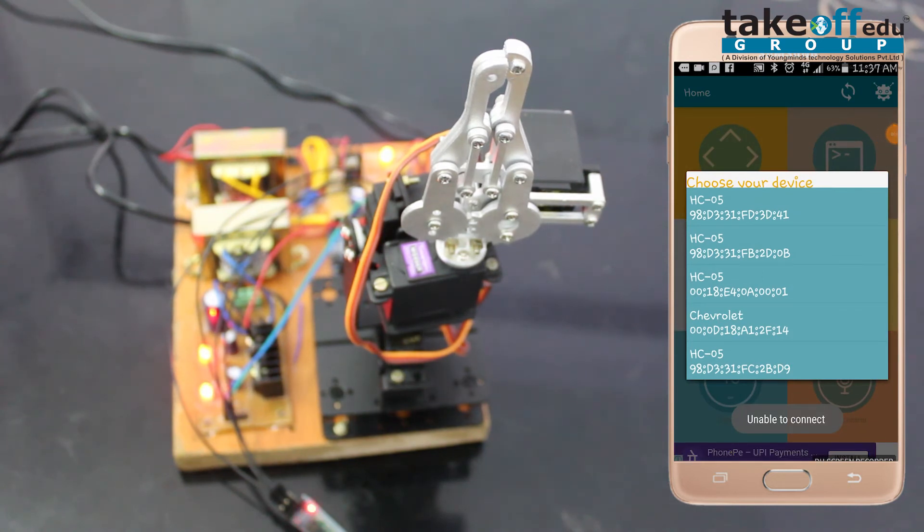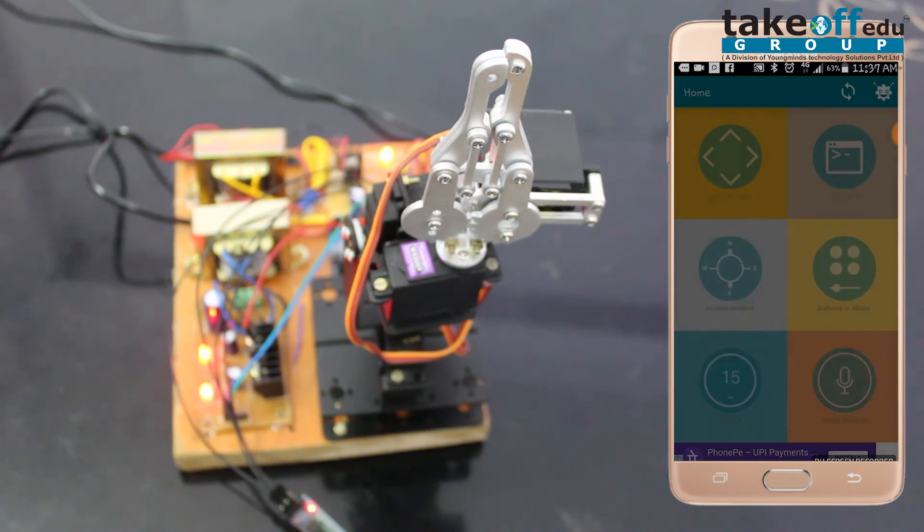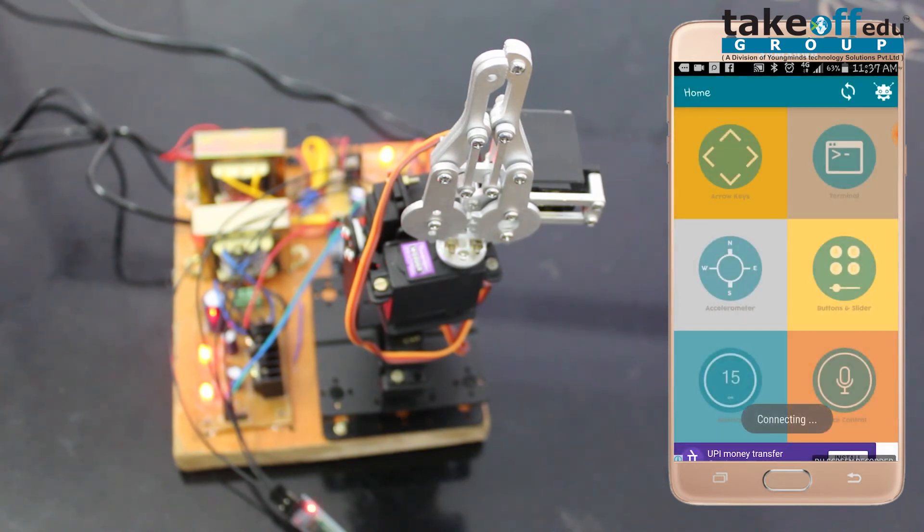Now, I am opening the Arduino blue control app and trying to connect this Bluetooth module on this robotic arm. Now, it is connected to HC05. And I am using terminal.